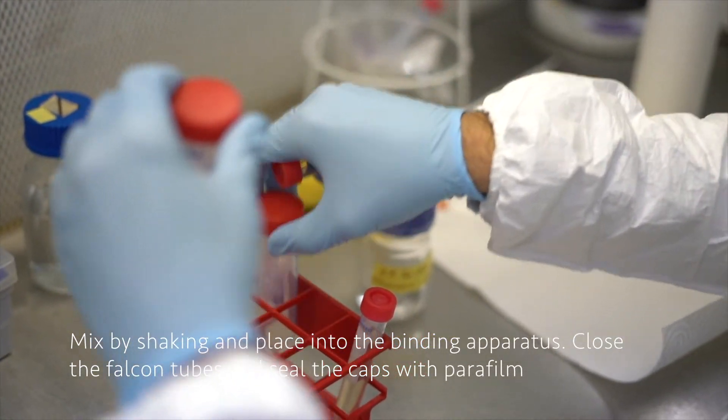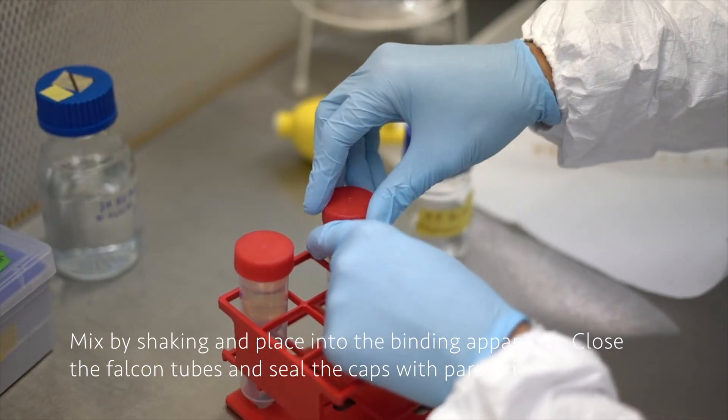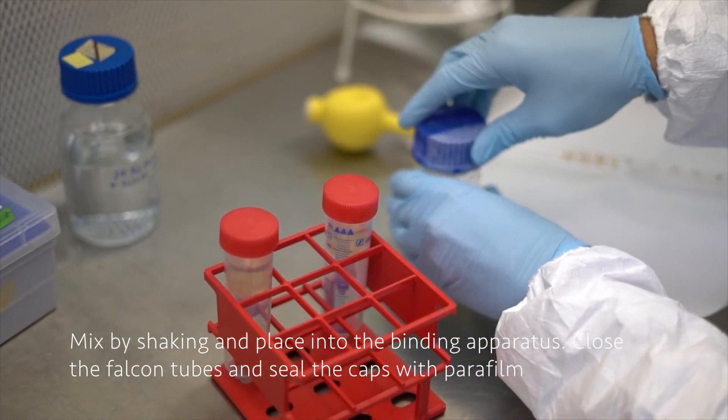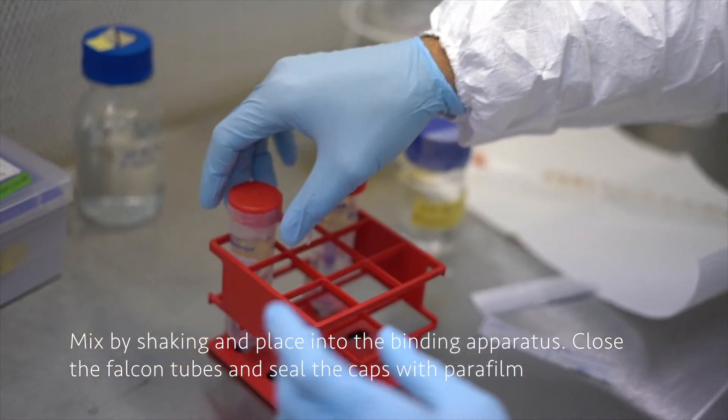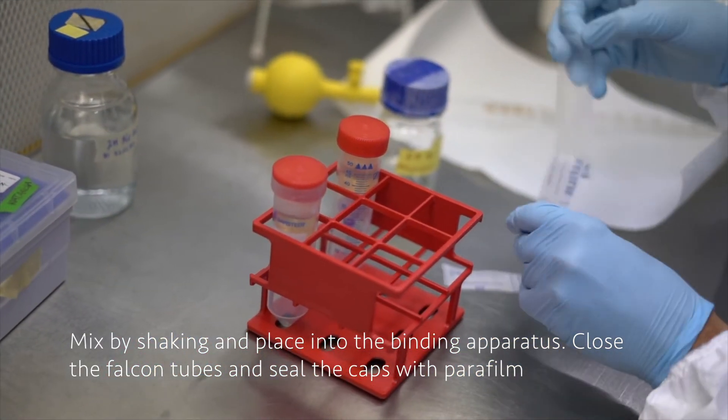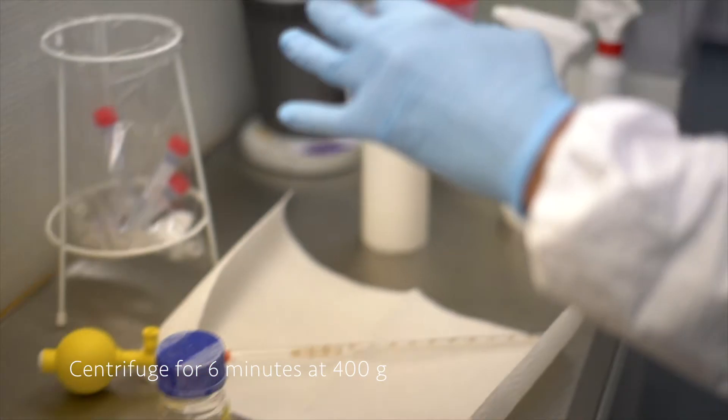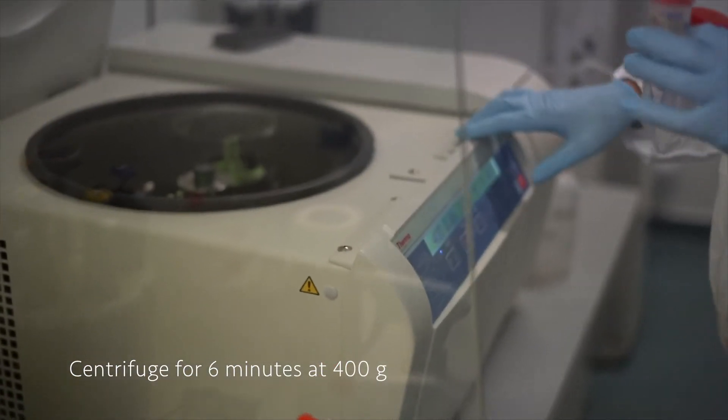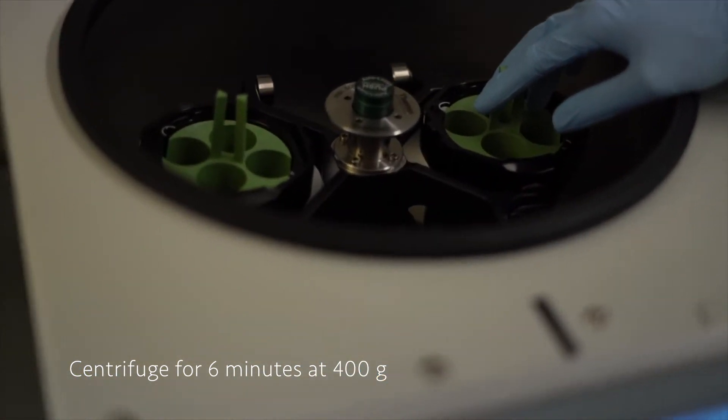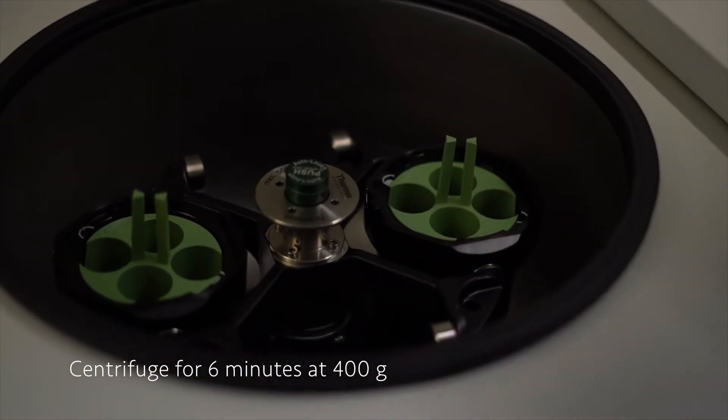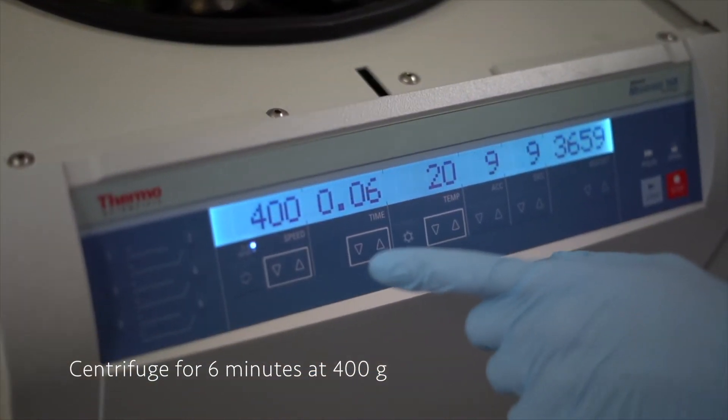Now we can mix everything by shaking a couple of times, and then place everything to the binding apparatus. Now we can seal the falcon tube with some parafilm, just because the Zymo reservoir is not going to close very well. And then we are going to centrifuge it in a bigger centrifuge. We need a specific rotor for a 50 milliliter falcon tube, and we are going to centrifuge them for 6 minutes at 400 g.